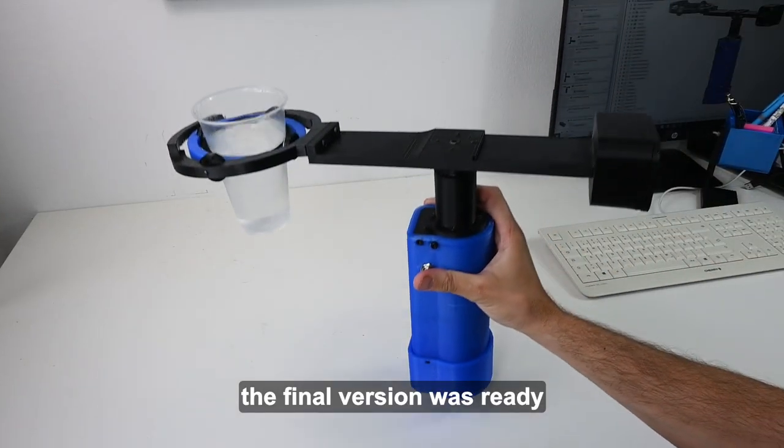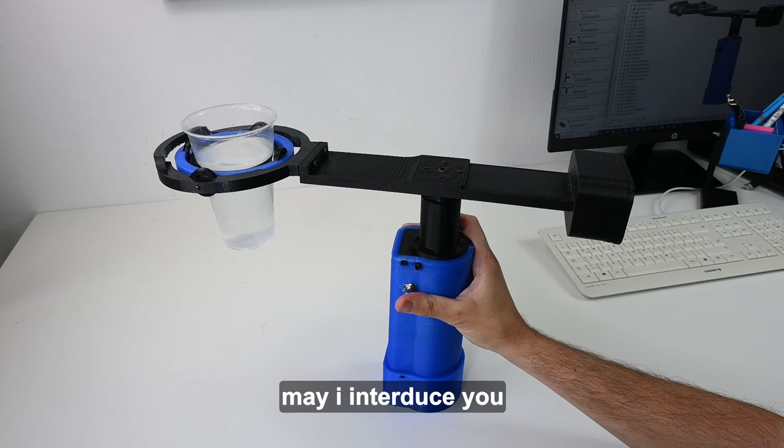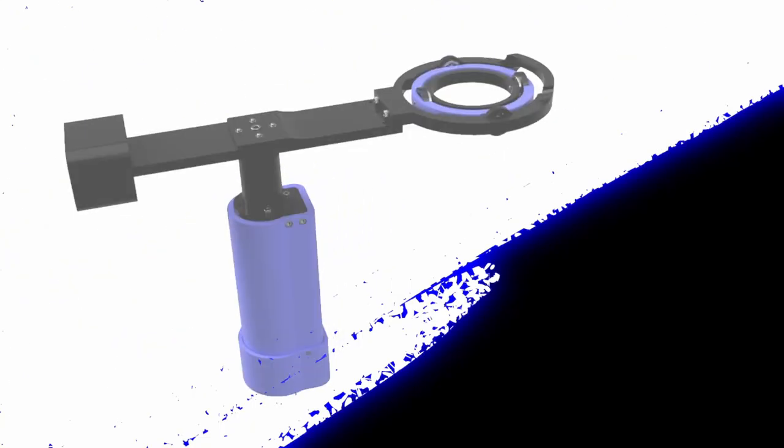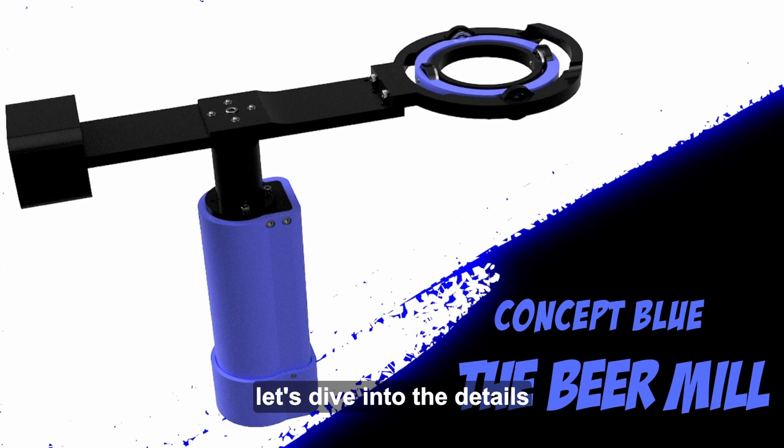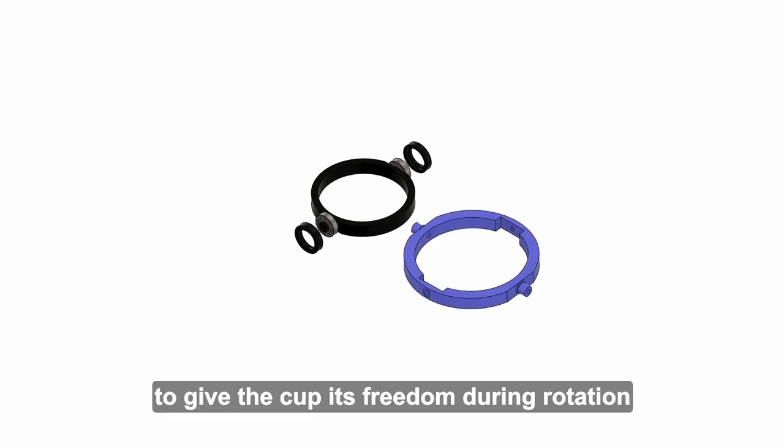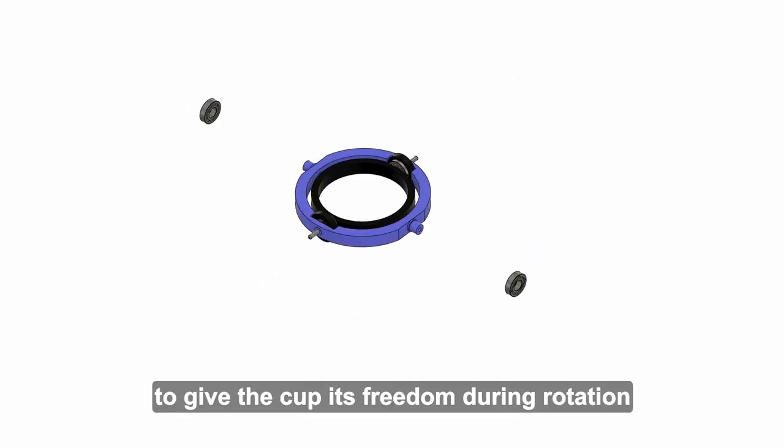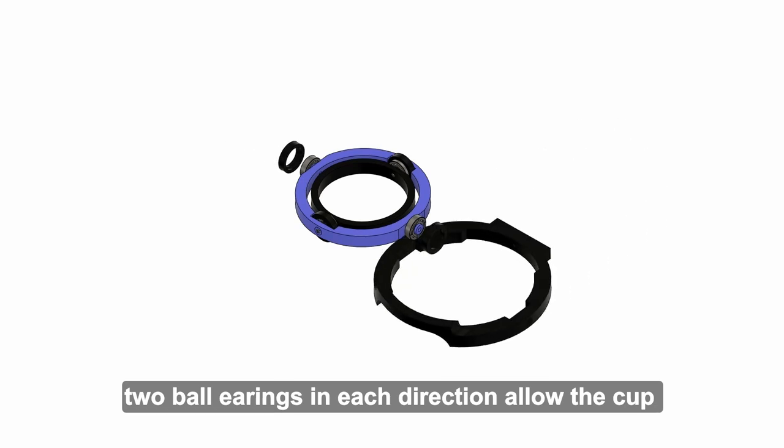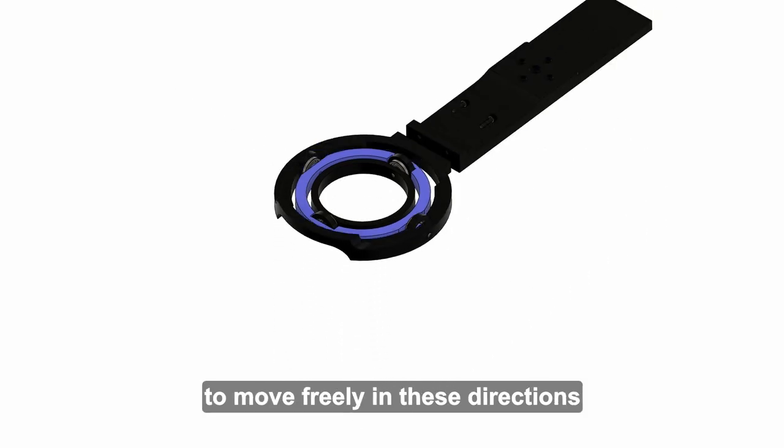The final version was ready. May I introduce you the beer mill. So let's dive into the details. First we need some sort of a gimbal to give the cup its freedom during rotation. Two ball bearings in each direction allowed the cup to move freely in these directions.